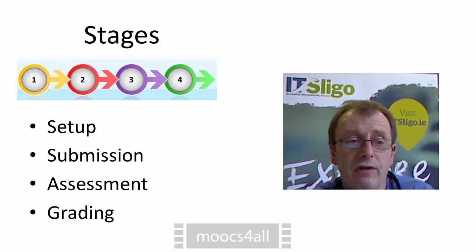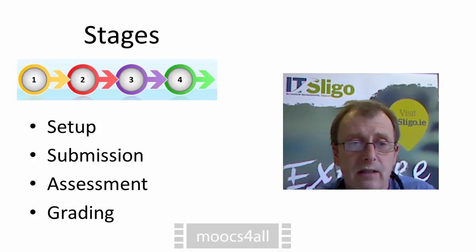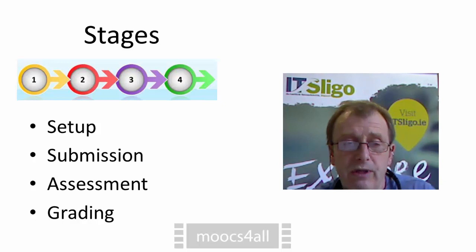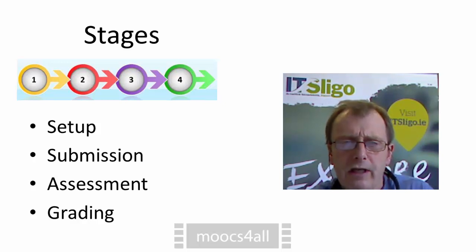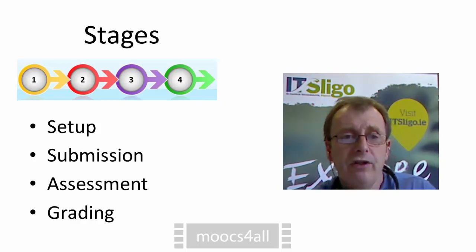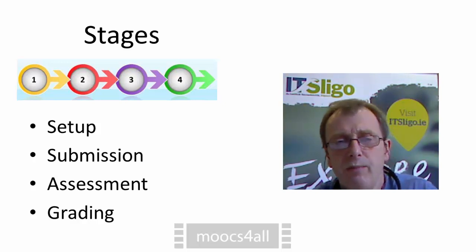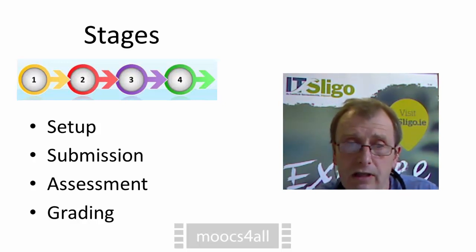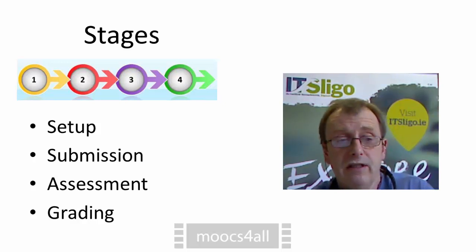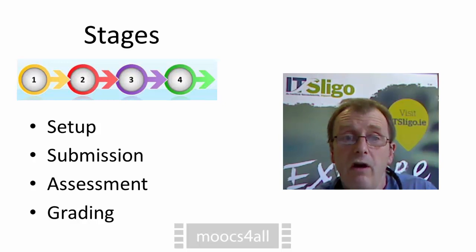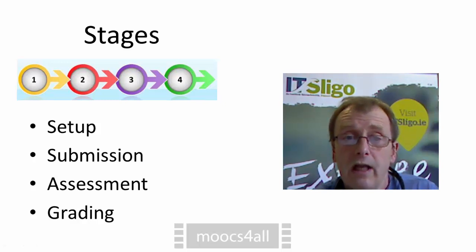Once that end date comes, it goes to the third stage, which is assessment, and a period of time is given to the learners to go into the system and assess the other submissions that have been allocated to them. Once their assessment is finished, the computer works out the grade. The grading can be a little bit more complicated than just taking an average of the marks peers have given. There is a danger that peers will mark inaccurately, and marking inaccurately can be a sign that you don't really understand the assignment. So students are also graded on their ability to mark other students accurately, and that's taken into the grading calculations as well.